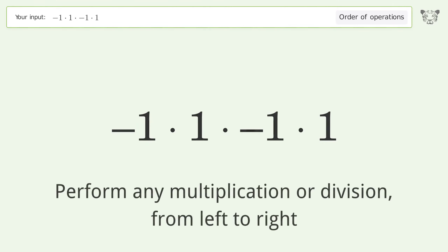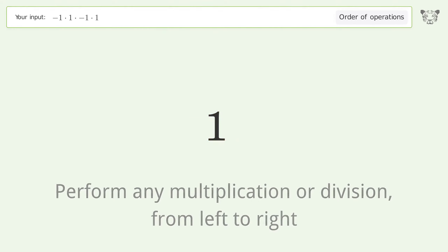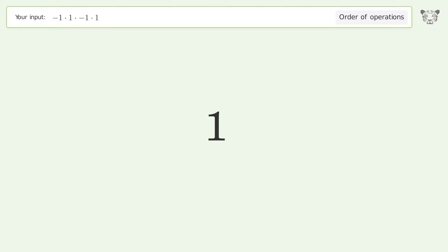Perform any multiplication or division from left to right: negative one times one equals negative one, negative one times negative one equals one, one times one equals one. And so the final result is one.